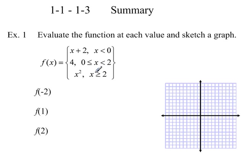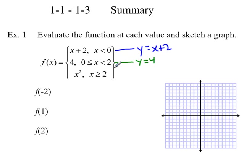This is what's called a piecewise function. f(x) equals three pieces: we use the first piece for all x values less than zero — that's like y equals x plus 2, but only for x less than 0. The second piece, f(x) equals 4, applies when x is between 0 and 2. The third part, f(x) equals x squared, applies when x is greater than or equal to 2. We're looking at three different parts of functions, not their entire graphs.